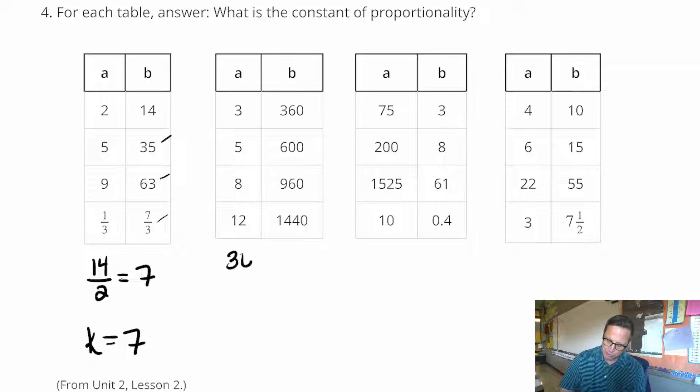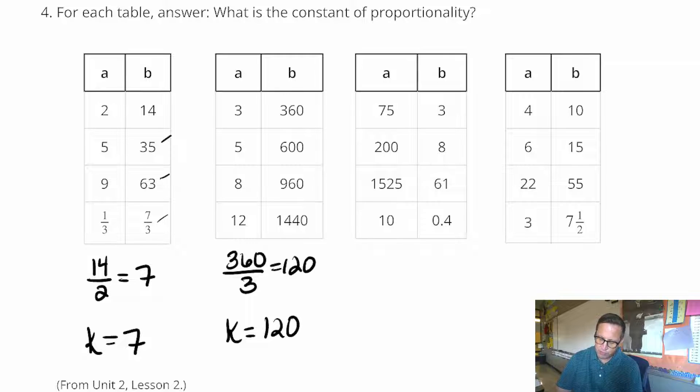This next one, I'm going to do 360 divided by 3, which is 120. And that's your constant proportionality for the second table.